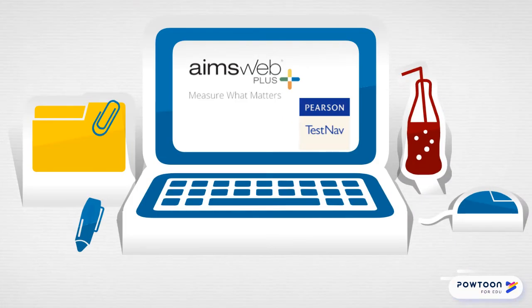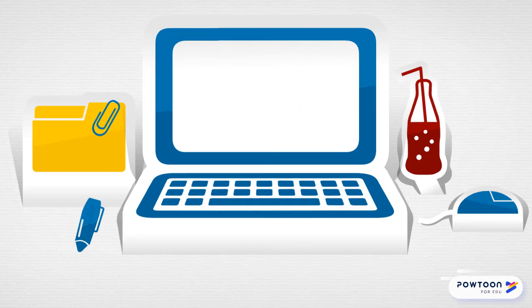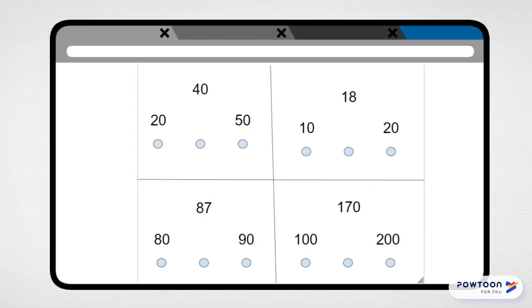Okay, so let's get started with our tutorial. When you first get into the NCFT, they'll give you two practice problems, one at a time. These are just to show you what the problems are going to be like. After you complete the practice problems, you'll see a screen that looks something like this. This screen has four problems on it. Each one separated by lines looks like quadrants, and each problem has three numbers and three dots.